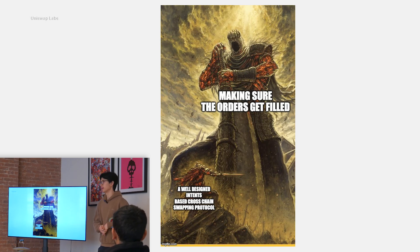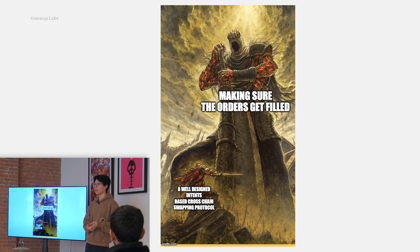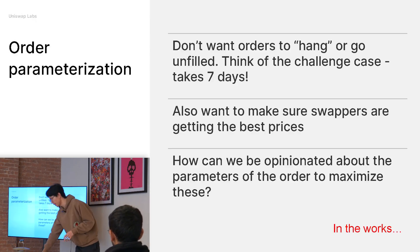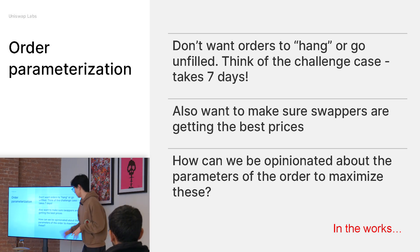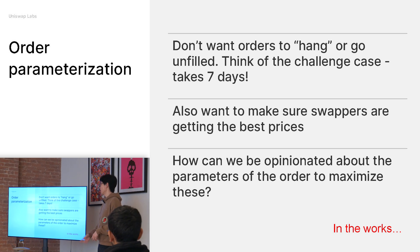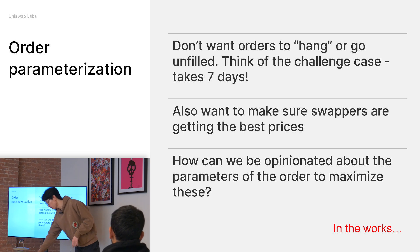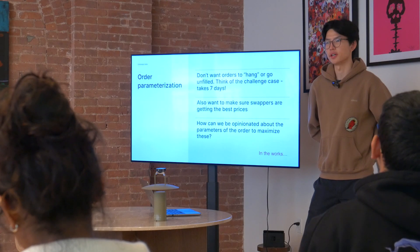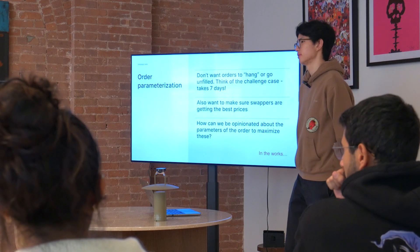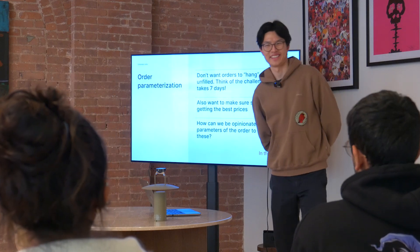We can design the system all we want, but the hardest part is making sure that the orders get filled. We don't want hanging orders. We don't want that seven-day unhappy path case — that's such bad UX. How can we tweak parts of the order to make that not happen? It's in the works — we've done a ton of experiments for the current version of Uniswap X to make it as good UX-wise as possible, and this is one of our top priority goals for cross-chain X. That was a lot of detail about Uniswap X and cross-chain X — happy to answer any questions.